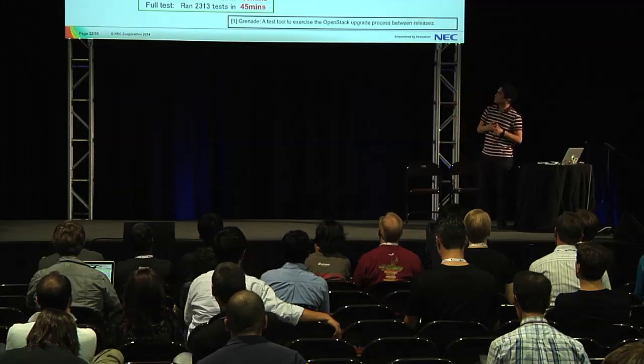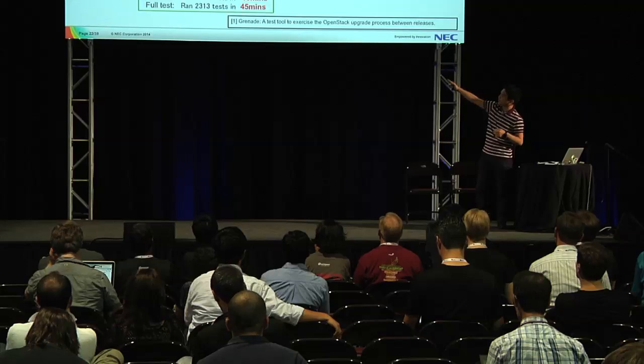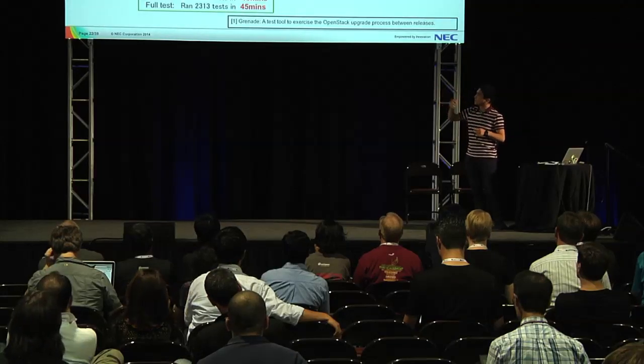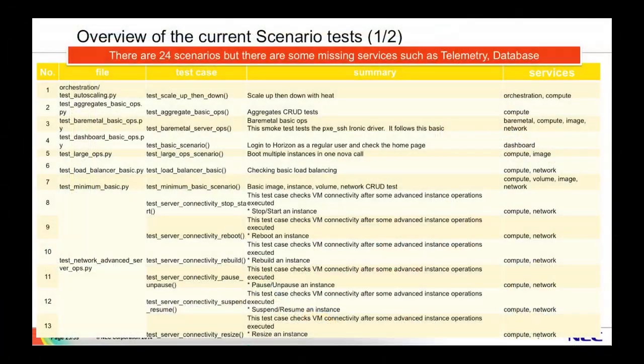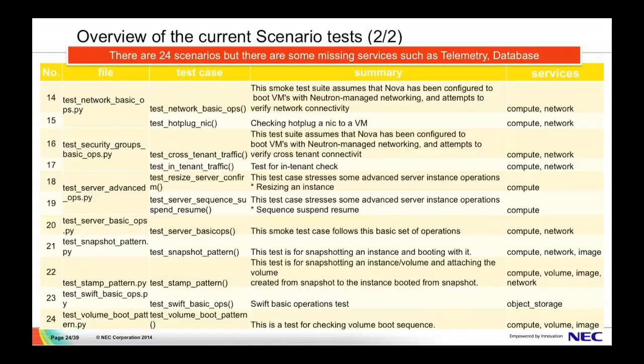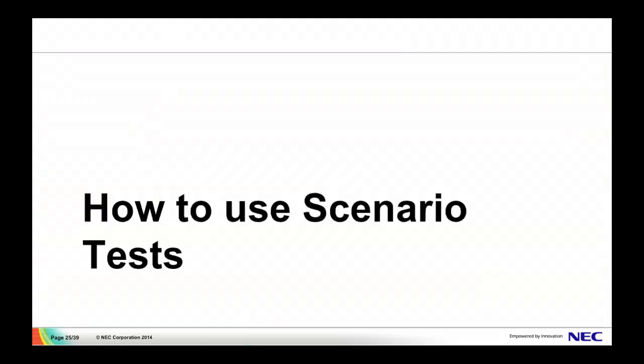As a result, we have been able to verify the OpenStack upgrade process in a short time. A full test takes about 45 minutes, but Grenade takes only 10 minutes. Here is an overview of the scenario test cases. There are 24 scenario tests now, but there are some missing services such as telemetry and the database — that is Telemetry and Trove.